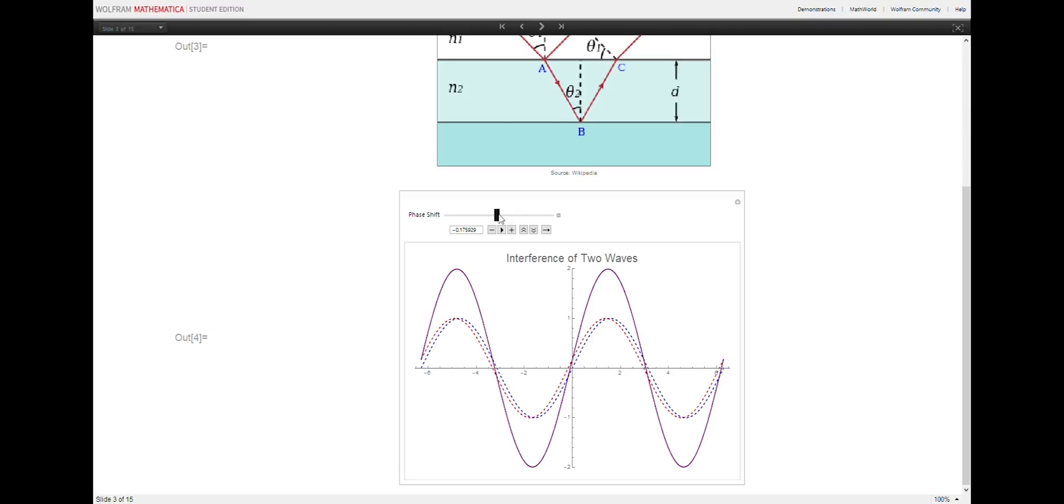Notice that the resultant wave has destructive interference when the phase shift is about 180 degrees, or pi radians, and it reaches the maximum amplitude, having constructive interference when the phase shift is a multiple of 2 pi radians.